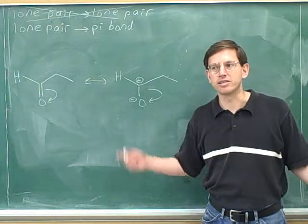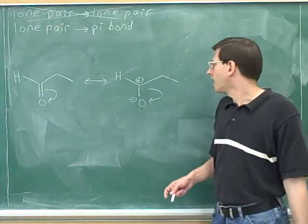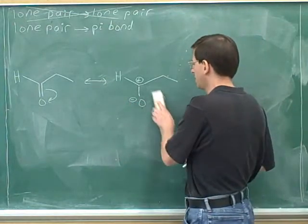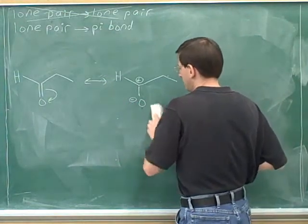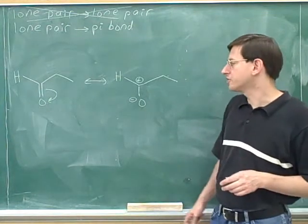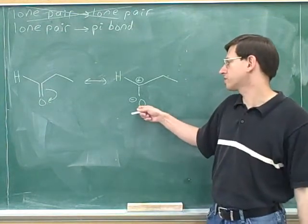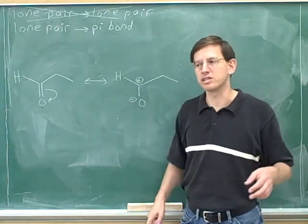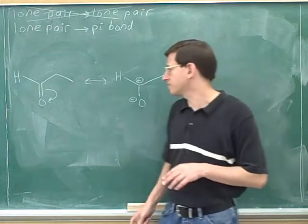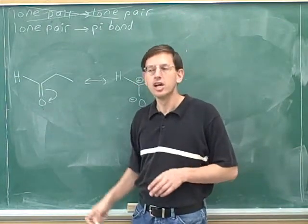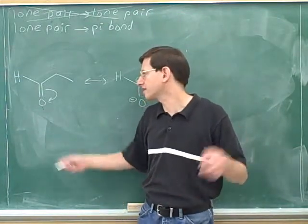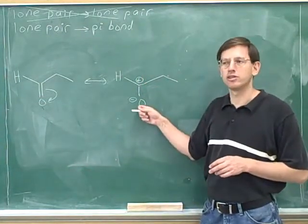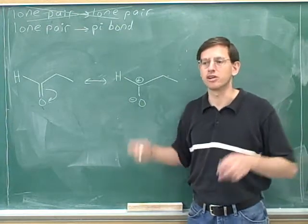We're usually not drawing lone pairs anymore. We're not going to draw this lone pair, but we are going to indicate the change in this oxygen's charge. And now anybody who understands formal charges should be able to see that this oxygen has three lone pairs and this oxygen has only two lone pairs. We shouldn't have to draw in the lone pairs because if we see an oxygen with no formal charge we should know automatically that there are two lone pairs, and we should know that an oxygen with a negative formal charge has three lone pairs.